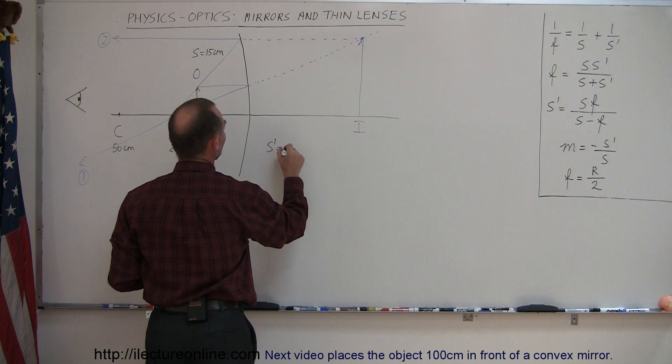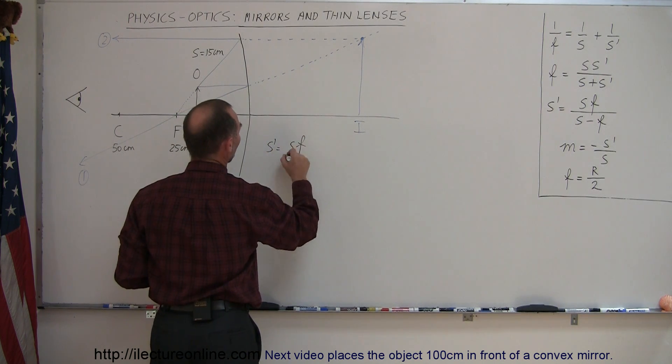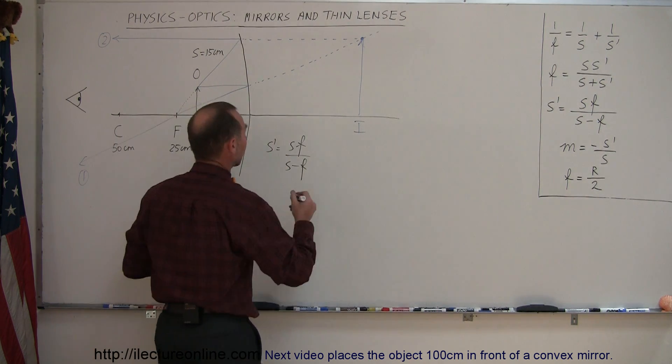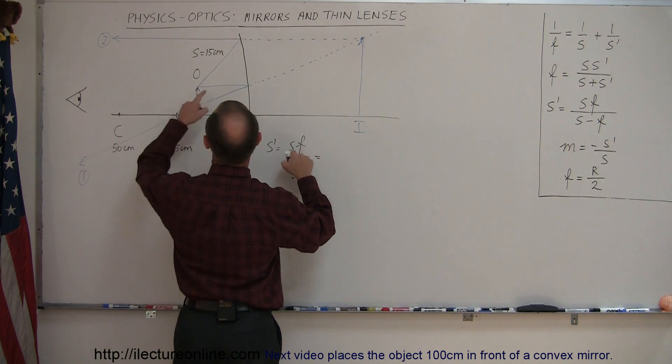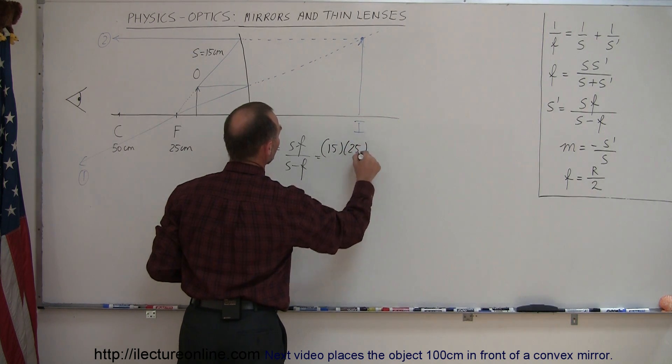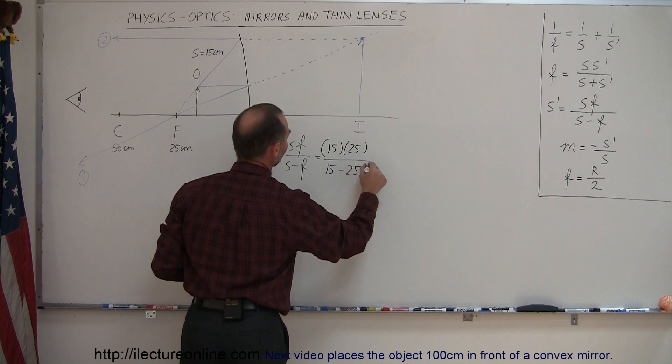So we have S' is equal to Sf over S minus F. And this pen is kind of drying out, so let me grab this one. Okay, numbers. S, image distance, 15 centimeters. Focal length was 25 centimeters. Image is 15 minus the focal length 25.